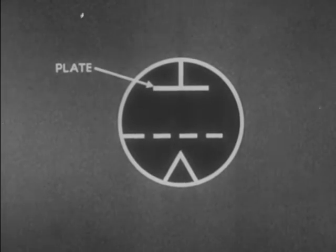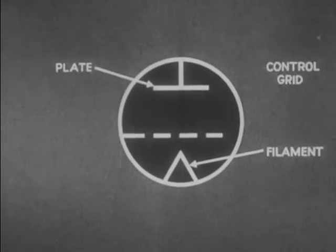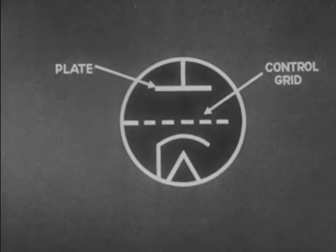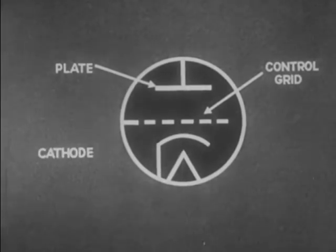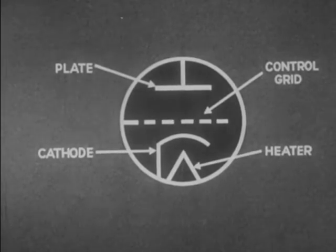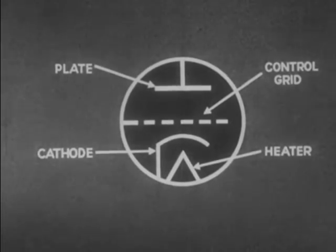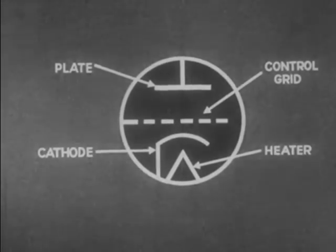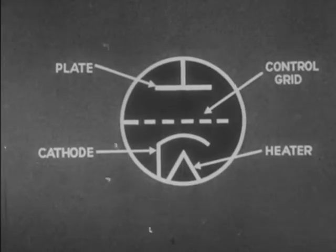This symbol represents the triode tube with its elements: the plate, filament, and control grid. The cathode may be equipped with an indirect heater. Between cathode and plate is the grid, which is the characteristic element of the triode tube. It serves as a control of the electron flow between cathode and plate.